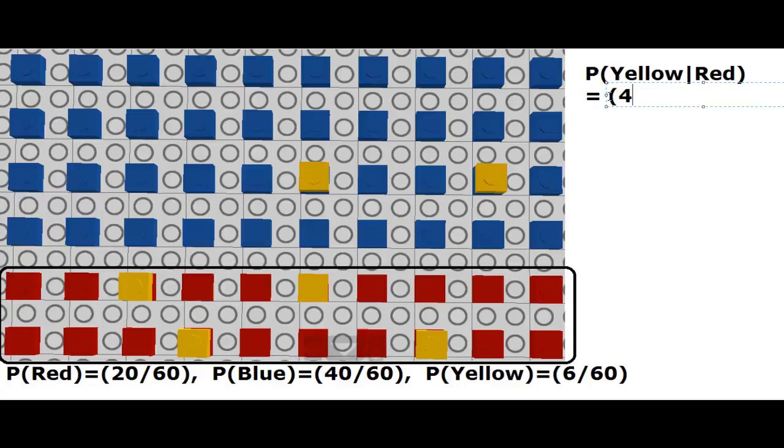So this probability will be 4 out of 20 red bricks are yellow. So we have probability that the brick has yellow color, given that it already is red, is 4 over 20.